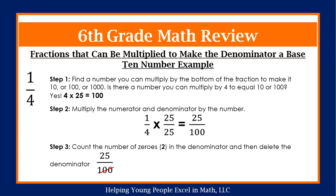For step three, we are going to use the same steps we did for our first strategy because we have a denominator with a base 10 number. We are going to count the number of zeros we have in the denominator. We have one, two, and then we are going to delete our denominator. Now we will be left with 25.